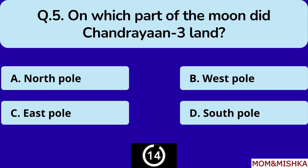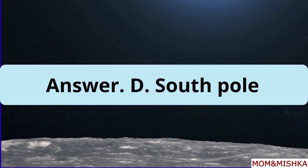On which part of the moon did Chandrayaan-3 land? On the South Pole, option D.